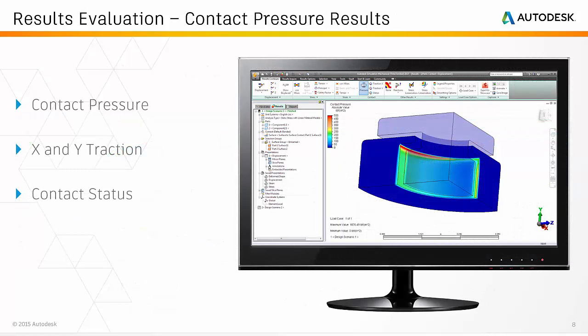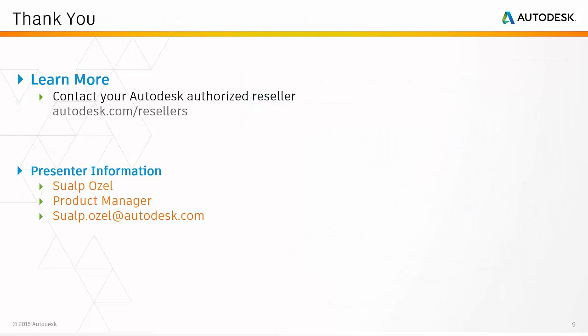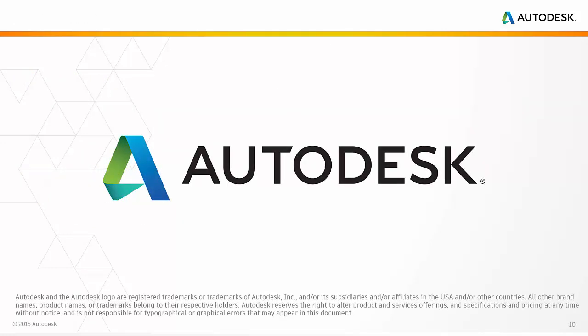In addition, the 2017 version can now display contact pressure results for applicable analyses performed using the NASTRAN solvers. We invite you to check out these features and many more improvements in Autodesk Simulation Mechanical 2017. If you'd like to find out more about the software and how it can help you in your design process, please contact your local Autodesk authorized reseller. Thank you for your time.